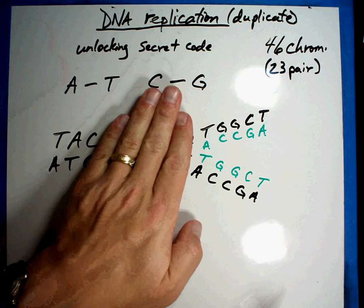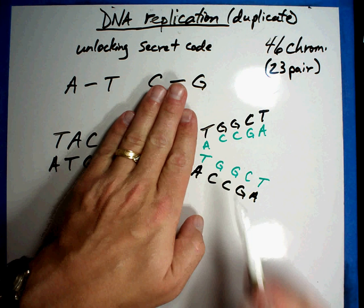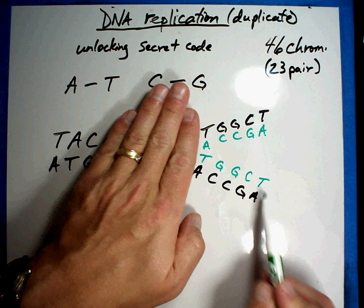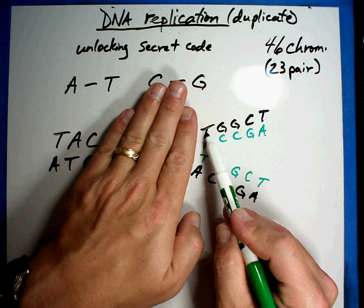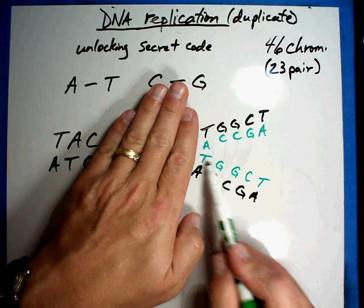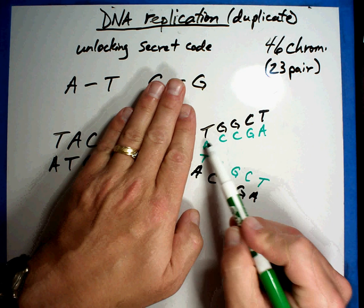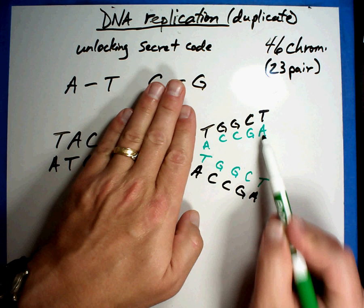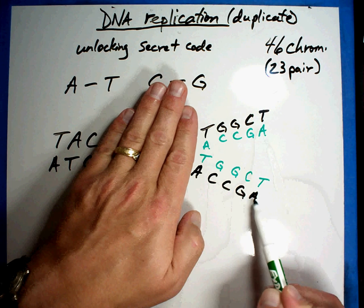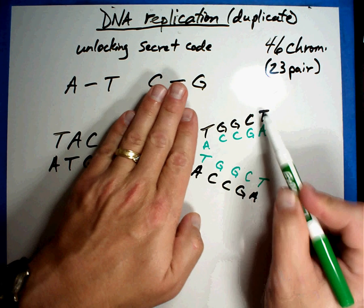Now you'll notice if I cover up my DNA right here, it's exactly the same from here to the end. T, G, G, C, T. T, G, G, C, T. A, C, C, G, A. A, C, C, G, A. They're exactly the same. You're duplicating your DNA.